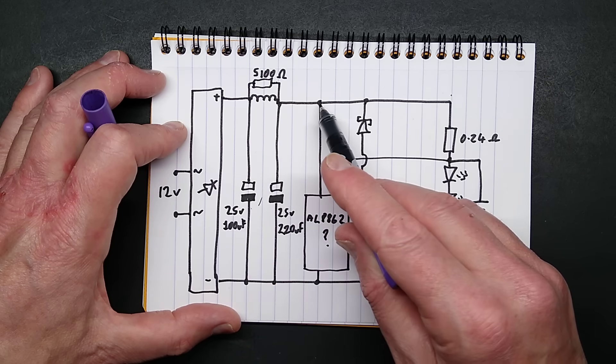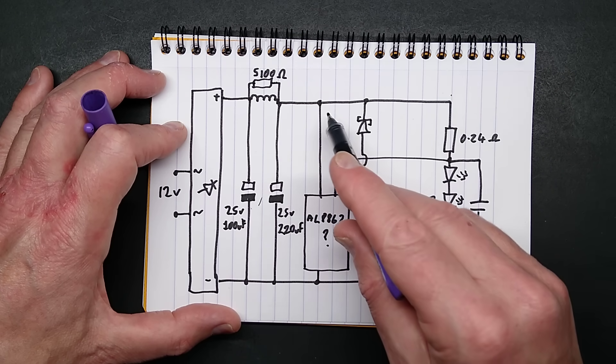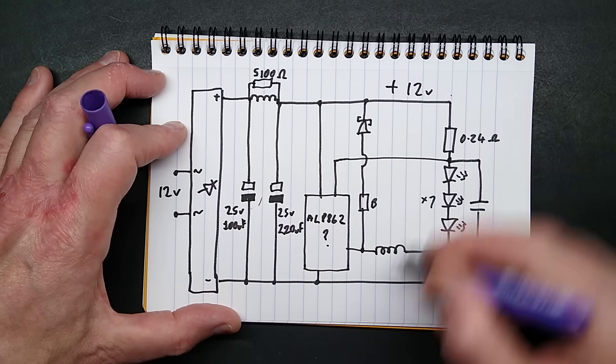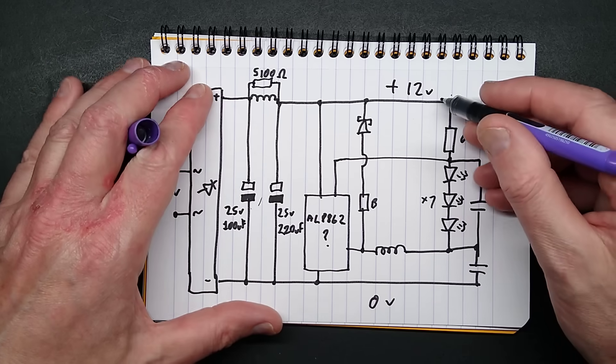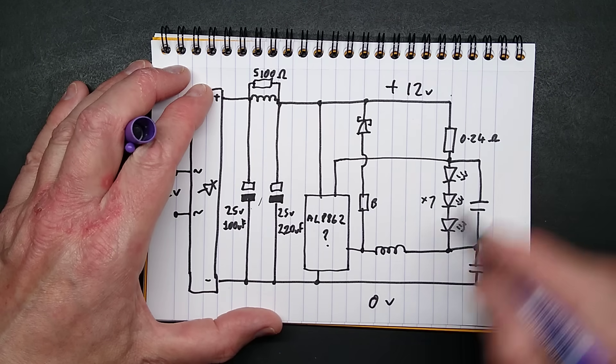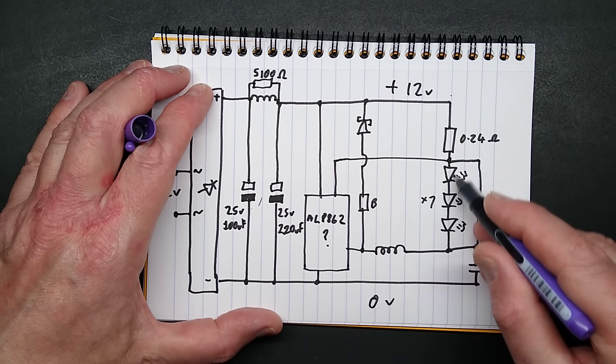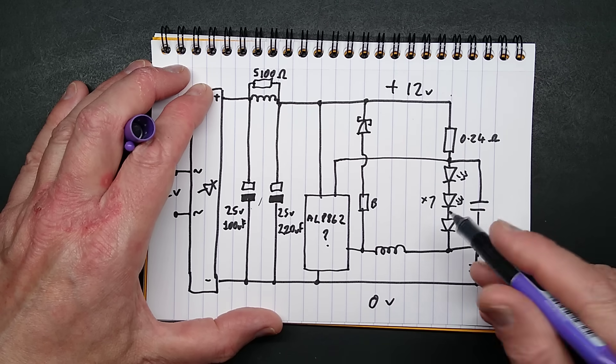So what happens here is that the positive rail here, let's say plus 12 volts roughly, and zero volts. Current, when this turns on the inductor, current can flow through the sense resistor, 0.24 ohms, through the LEDs, and there's three LEDs in series effectively, but then there's seven multiples of those in parallel.